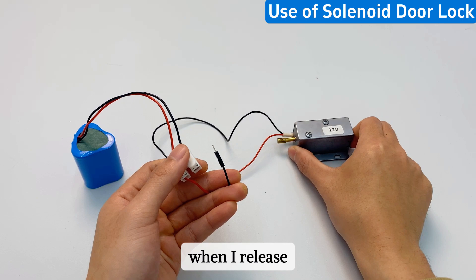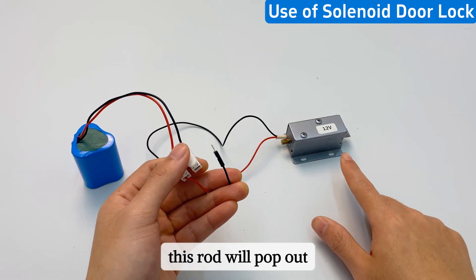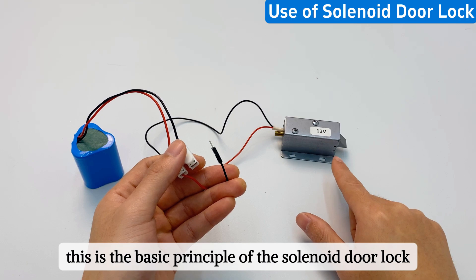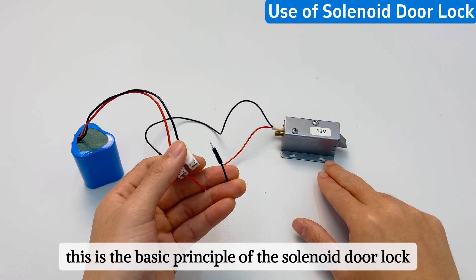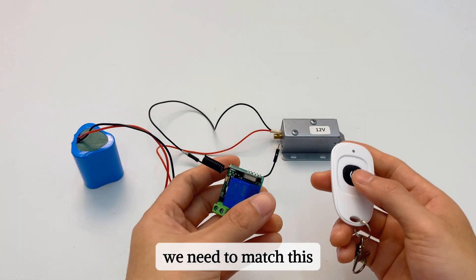When I release, this rod will pop out. This lock closes again. This is the basic principle of the solenoid door lock.